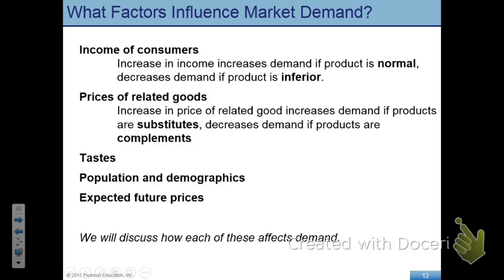What we also started in the last class was looking at factors that could cause the demand curve to shift either to the right or to the left. Any factor other than the price of the good will cause the demand curve to shift. Whenever price changes, you are going to move along the same demand curve. But if anything other than price changes — like income, price of related goods, or taste — your demand curve is going to shift. Today we are going to look at those factors.